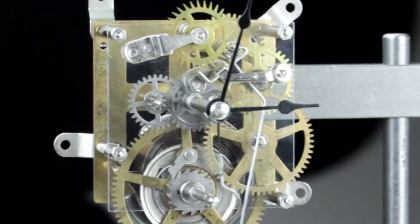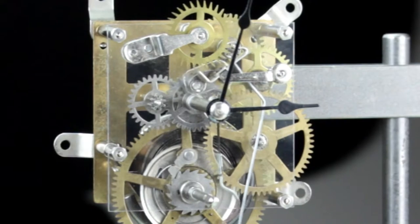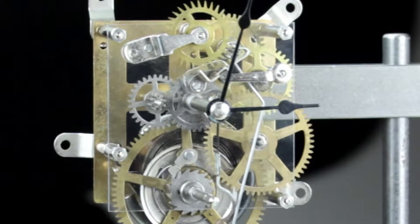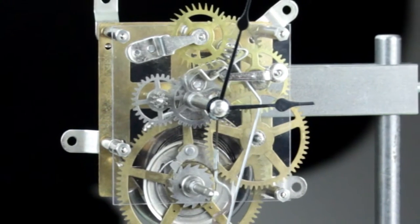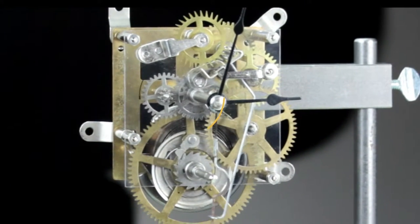Most clocks have an hour hand concentric with the minute hand, and this hour hand makes one full turn for every 12 turns of the minute hand. This special set of wheels driven off the center arbor is called the motion works.